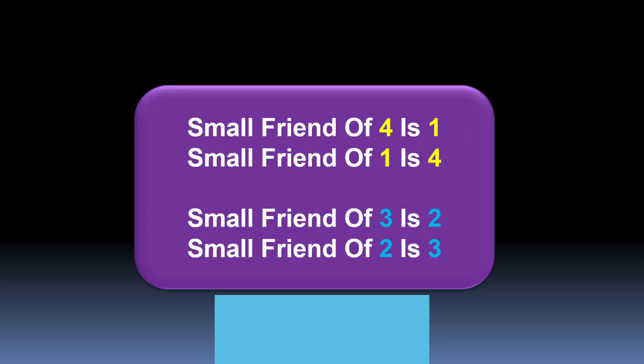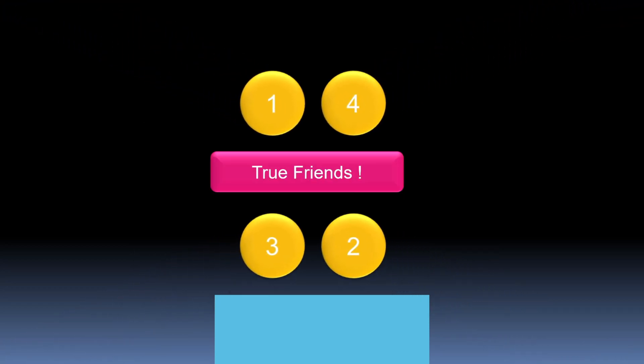The small friend of 4 is 1, so the small friend of 1 is 4. Similarly, the small friend of 3 is 2, so the small friend of 2 is 3. These are true small friends: friend of 1 is 4 and friend of 4 is 1; friend of 3 is 2 and small friend of 2 is 3.